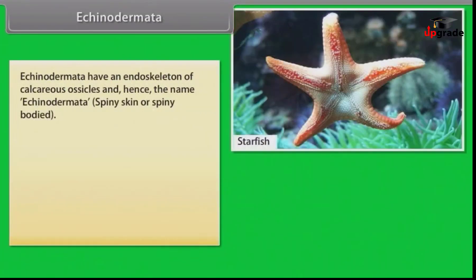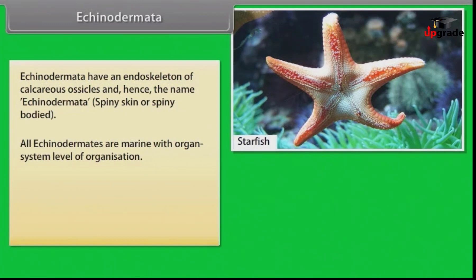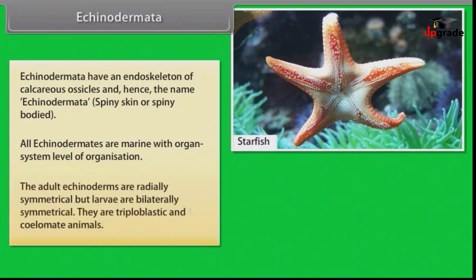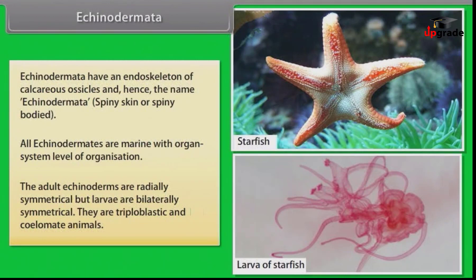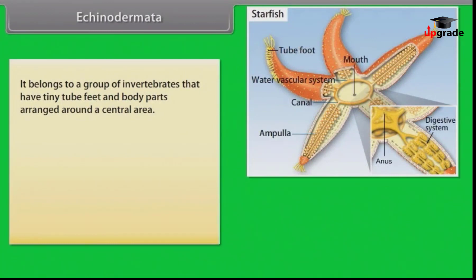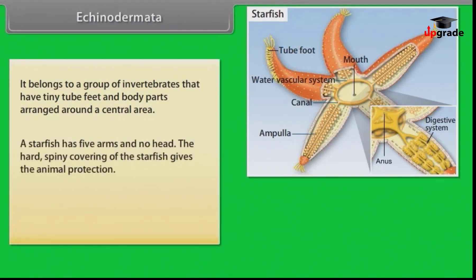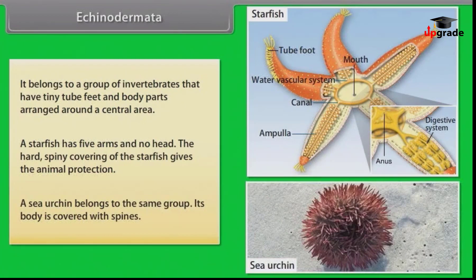Echinodermata have an endoskeleton of calcareous ossicles, hence the name Echinodermata, meaning spiny skin or spiny bodied. All echinodermates are marine with organ system level of organization. Adult echinodermates are radially symmetrical, but larvae are bilaterally symmetrical. They are triploblastic and coelomate animals. Echinodermates have tiny tube feet and body parts arranged around a central area. A starfish has five arms and no head, with a hard spiny covering for protection. A sea urchin belongs to the same group and its body is covered with spines.